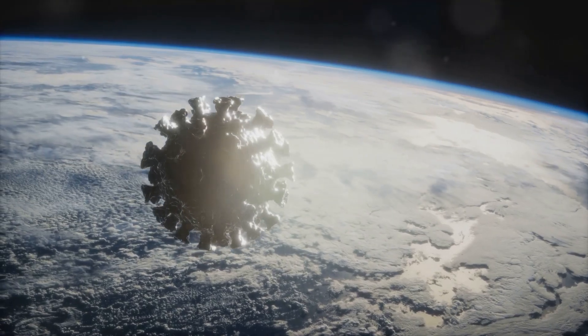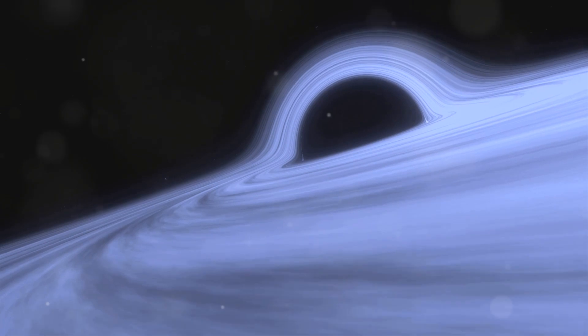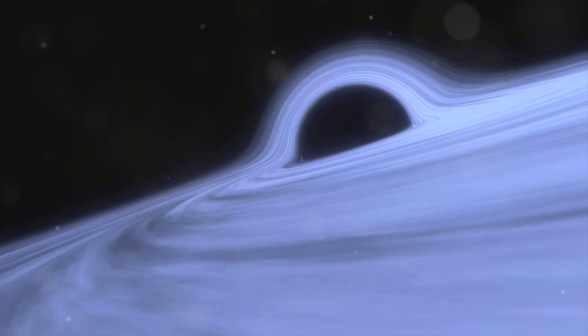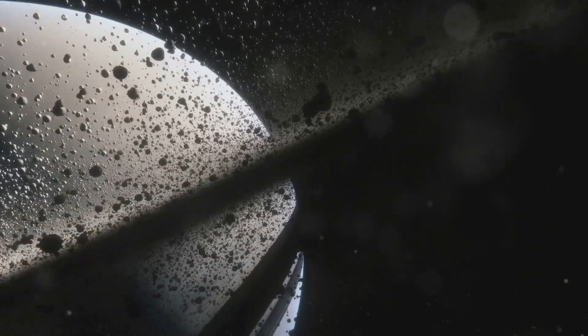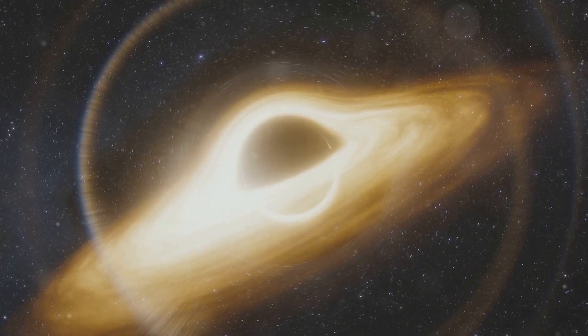The event horizon is not a physical surface like the surface of a planet. It's a region where the curvature of space-time becomes so extreme that all paths lead inward towards the singularity. Think of it as a waterfall where the water flows over the edge. Once you're past the edge, there's no going back upstream.